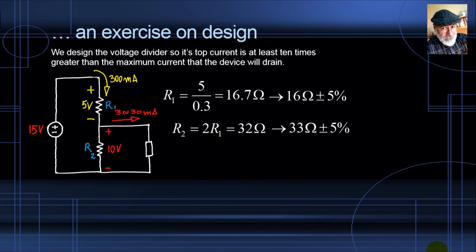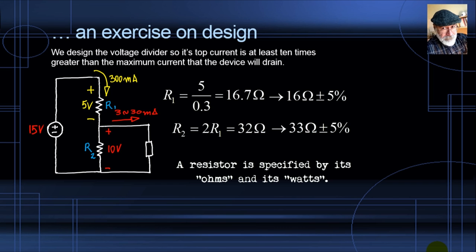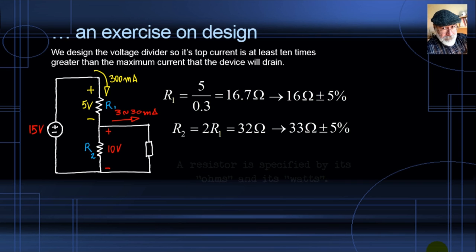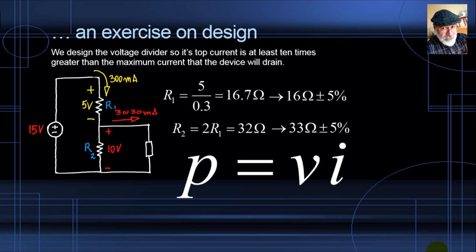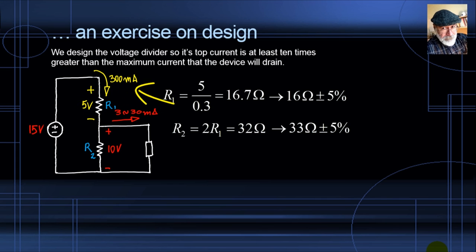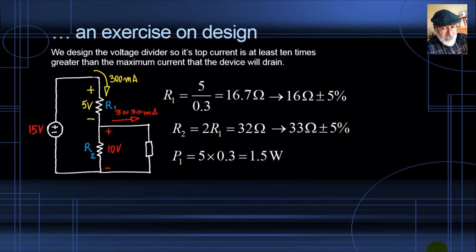But we also need to specify the power rating for each resistor. The power in R1 is V × I = 5 V × 0.3 A = 1.5 watts. The power in R2 is 10 V × (0.3 − 0.003) A ≈ 3 watts. Those resistors must handle those power levels without burning.